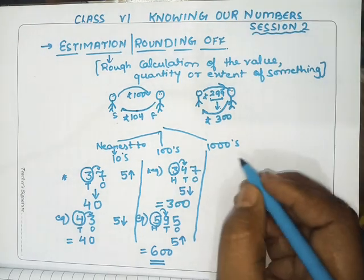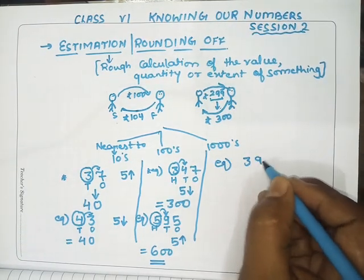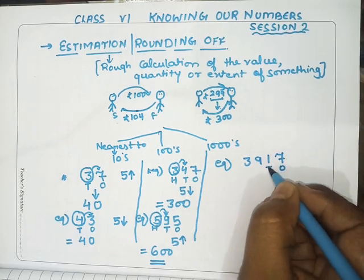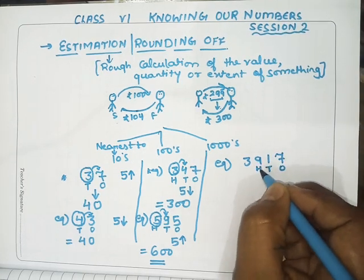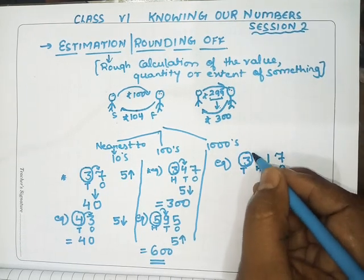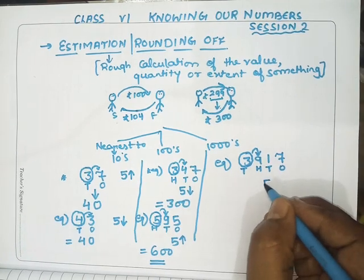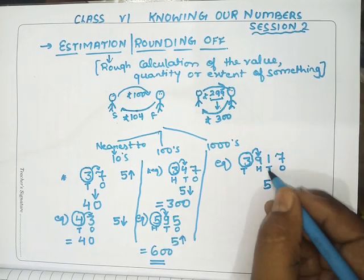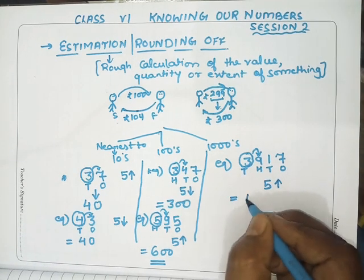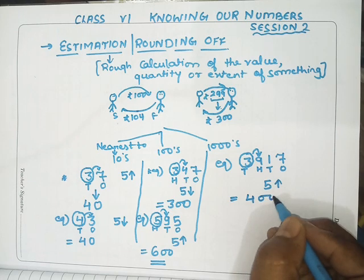Similarly for the thousands place — take the example 3917. We need to round off to the thousands place. The digit next to the thousands place is 9, which is greater than 5. So we add 1 to the thousands place: 3 + 1 = 4, and the remaining places become 000. The answer is 4000.